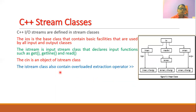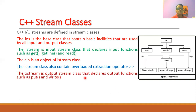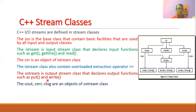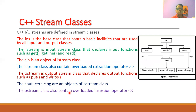The extraction operator, which we normally use with the cin object, is also overloaded in the input stream class. The ostream class is the output stream class that declares the output functions such as put and write. The objects cout, cerr, and clog are objects of the ostream class. The ostream class also contains the overloaded insertion operator, which we always use with objects such as cout.